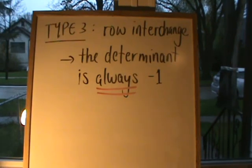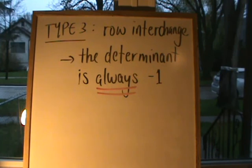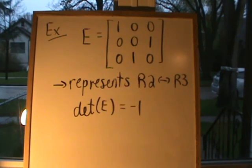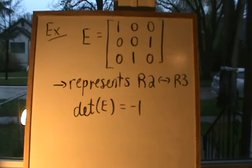Lastly, we have a type 3 elementary matrix. This is when we interchange two rows. The determinant of a type 3 elementary matrix is always equal to minus 1. Here is an example of a type 3 elementary matrix that represents row 2 switched with row 3, and its determinant is always going to be equal to minus 1.